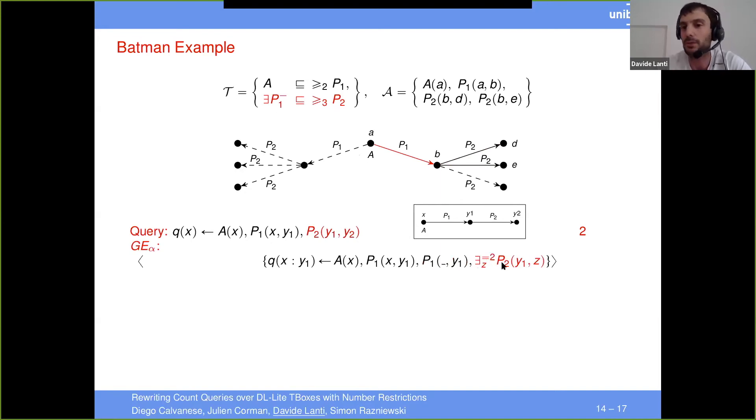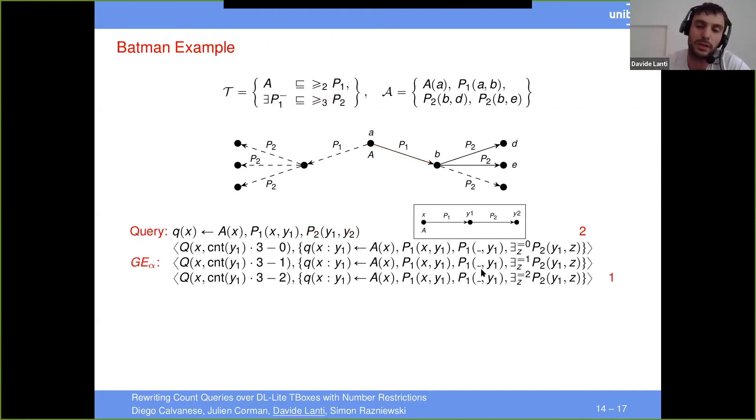And then here, I know that in the A-box I have exactly two P2 successors of this individual I1. Why one? I know it because it's here in the A-box. So what do I do? I know that since two are already there, there is only one missing in the anonymous part. And therefore, this is why I take the count. And then I subtract the two that I already have in the A-box. And this is how I get a one here. But of course, here I said I know that there are exactly two in the A-box. But in practice, I do not know. The rewriting algorithm doesn't know that there are exactly two individuals in the A-box. And therefore, it has to try all the possibilities.